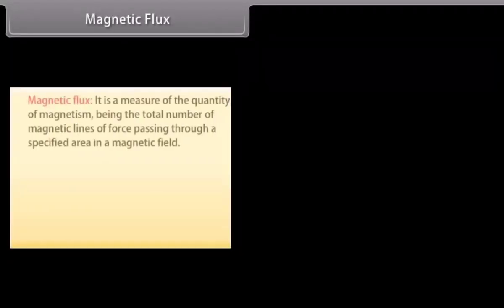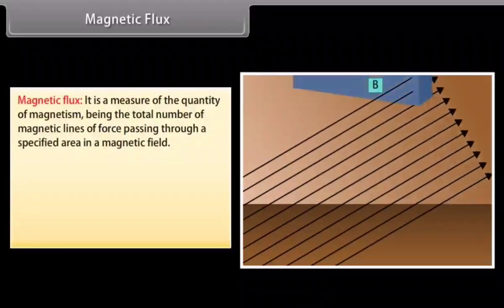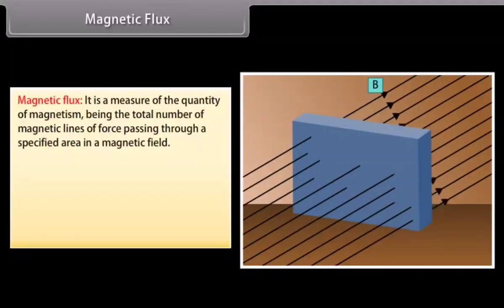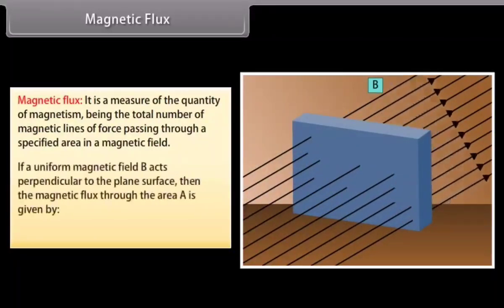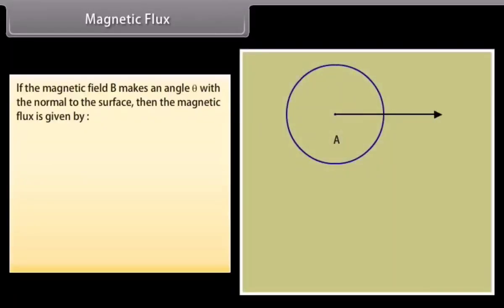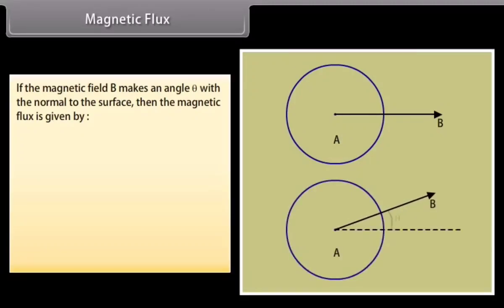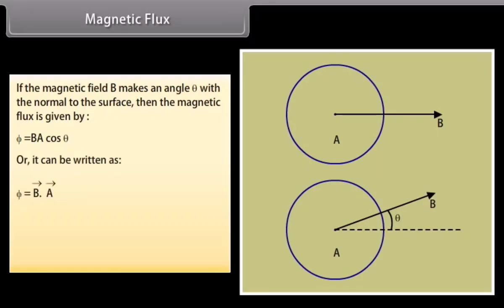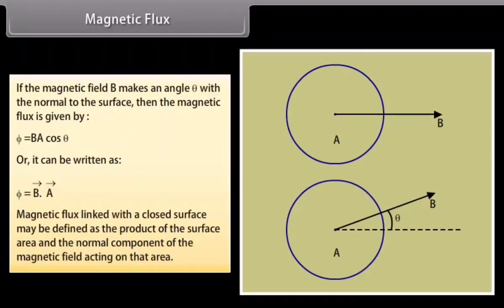Magnetic flux is a measure of the quantity of magnetism, being the total number of magnetic lines of force passing through a specified area in a magnetic field. If a uniform magnetic field B acts perpendicular to the plane surface, then the magnetic flux through area A is given by the product of B and A. If the magnetic field B makes an angle theta with the normal to the surface, then the magnetic flux is given by B·A·cos(theta), or Phi equals the dot product of B and A. Magnetic flux linked with a closed surface is defined as the product of the surface area and the normal component of the magnetic field acting on that area.